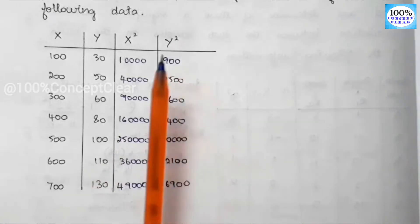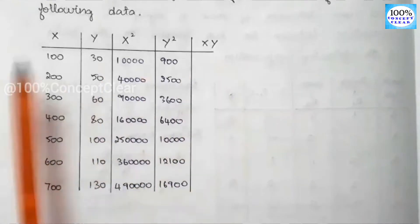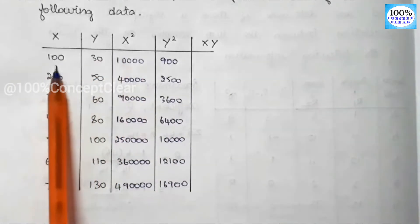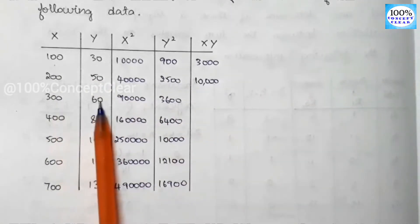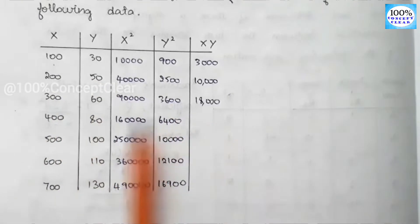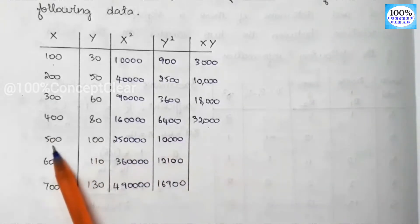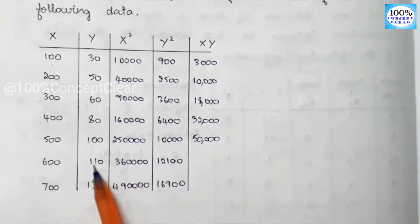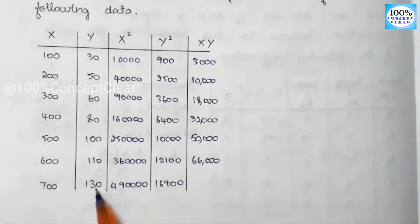Now we have to do x into y values. 100 into 30 is equal to 3,000 and 300 into 60 is equal to 18,000 and 400 into 80 is equal to 32,000 and 500 into 100 is equal to 50,000 and 600 into 110 is equal to 66,000. Next, 700 into 130 is equal to 91,000.